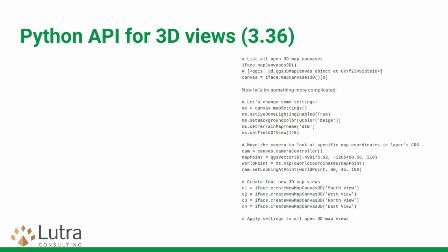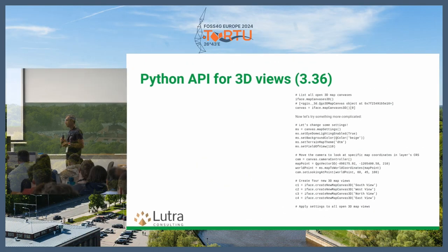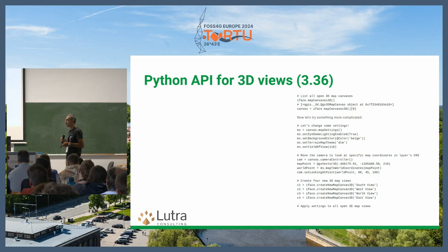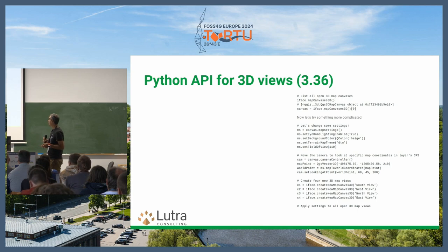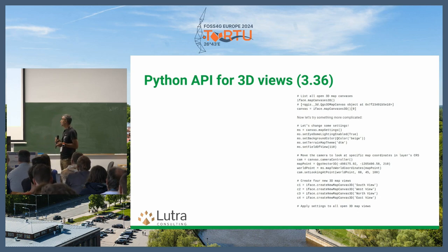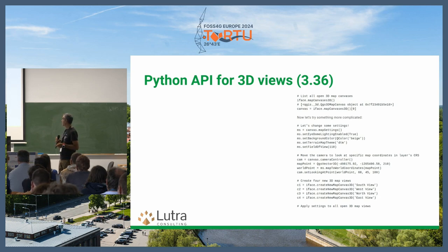There's also a Python API for 3D views so you can programmatically create your views in QGIS — useful if you're writing a plugin. You can programmatically control the camera angle, the scene, lighting, etc.